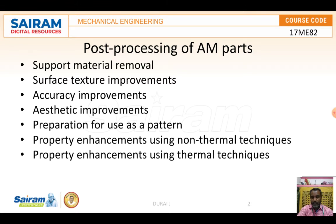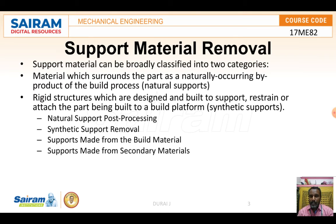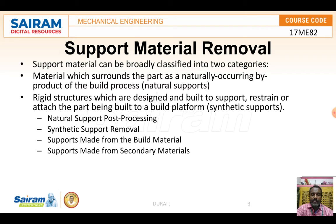The last two points indicate increasing the strength, toughness, and ductility of the material. The first topic we are going to discuss is support material removal. Support material removal is classified into two types: natural support and synthetic support. Natural support refers to the material which surrounds the part naturally, occurring as a by-product of the build process — this is the natural support, normally on the build platform.